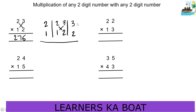First step: right side two numbers — 3×2 is 6, so 6 is 6. Second step: 2×2 is 4, plus 1×3 is 3, so 4 plus 3 is 7, here 7 is 7. Next, left side two numbers: 2×1 is 2, so 2 is 2.